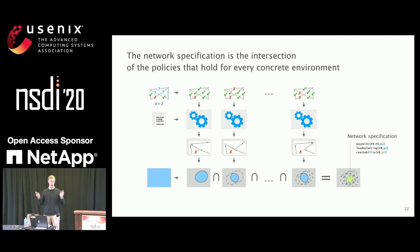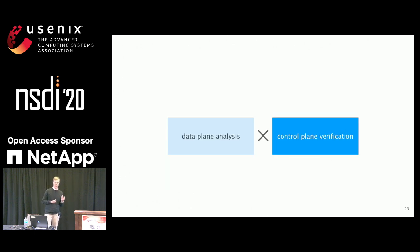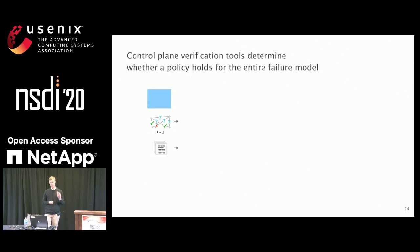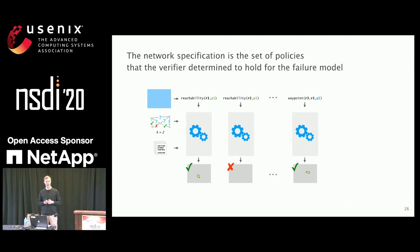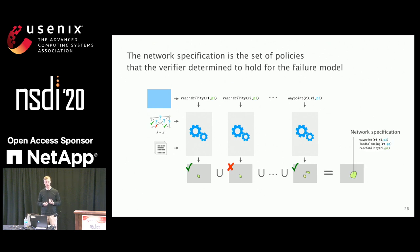This is an over-approximation that we slowly refine through intersection. We can do the same thing by looking at the policies using control plane verification. We take one policy after the other, feed it together with the failure model and configuration into the verifier, and the verifier tells us whether this policy holds for the entire failure model or not. By taking the union of all policies that hold, we get the specification — this is an under-approximation that we expand until we reach the full specification.